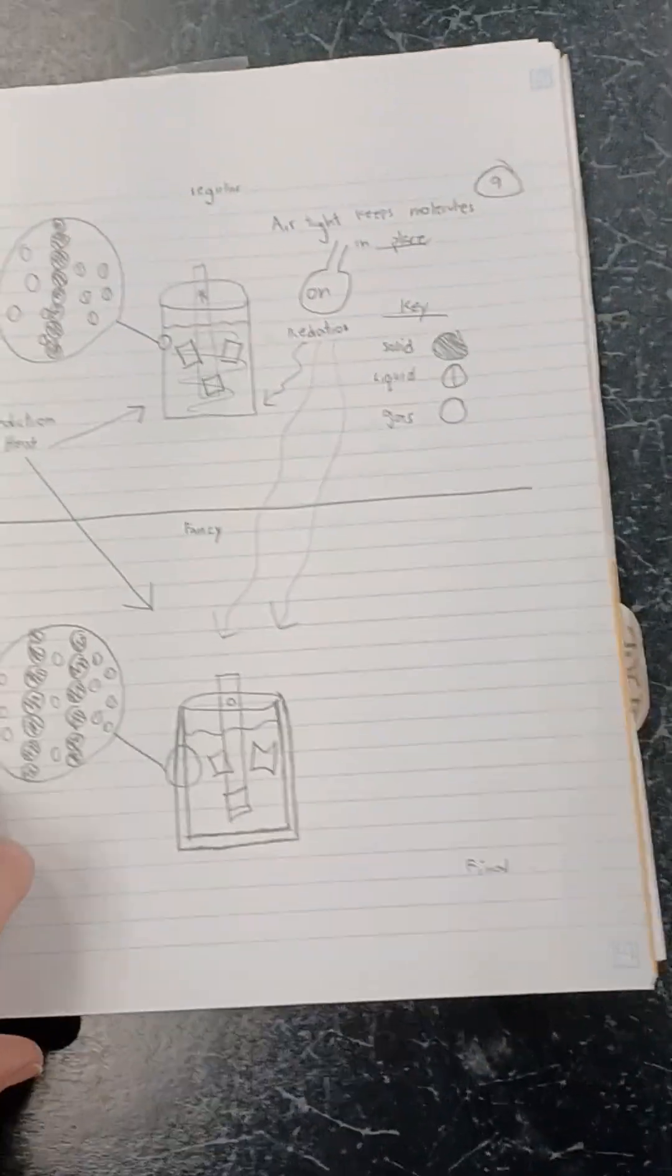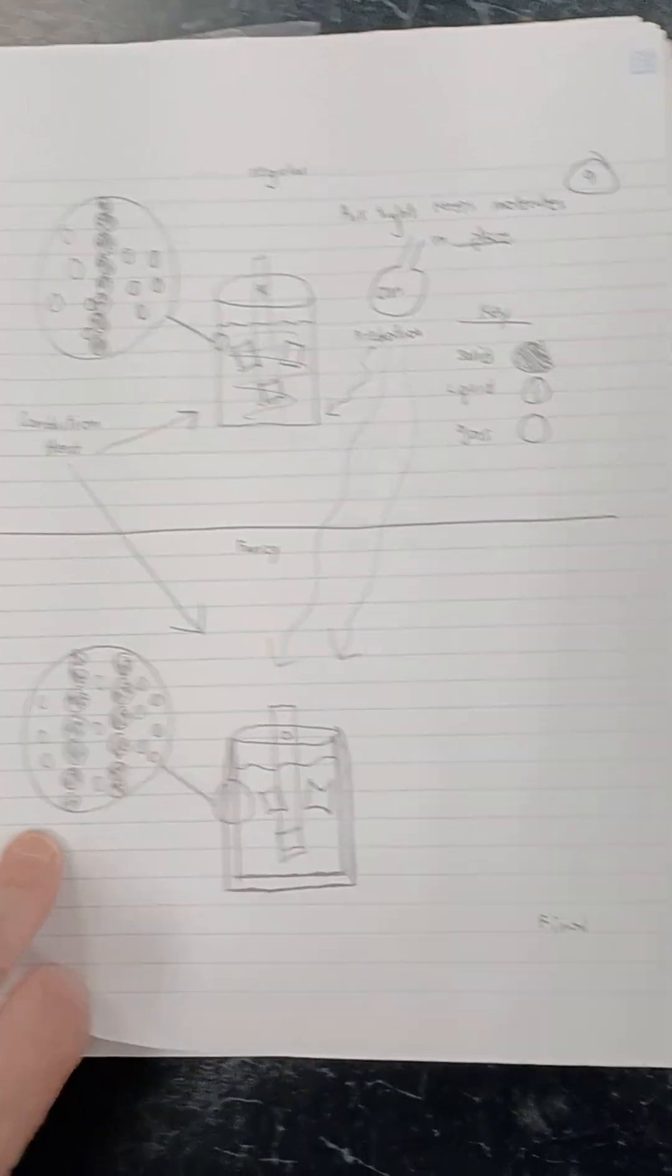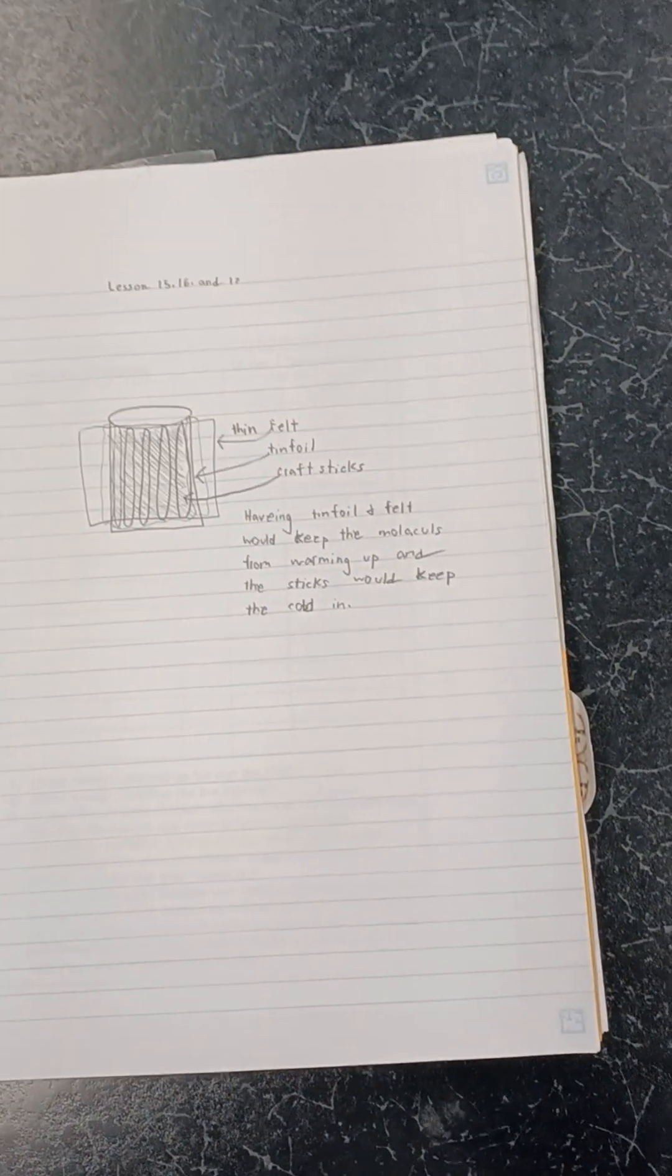What we did is we took all the information, all the experiments, and we glued down this chart of everything that we have found to be true to then make our final scientific model. We came up with our final scientific model.